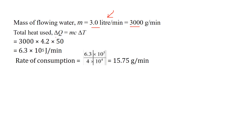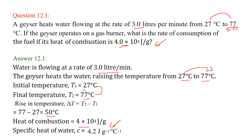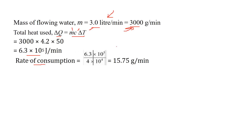Total heat being used: delta Q equals mc delta T. m is 3000 g/min, c is 4.02, and delta T is 50. Putting these values gives the total heat used in Joules per minute. The heat of combustion given in the question has to be divided into the total heat being used, giving us the rate of fuel consumption.